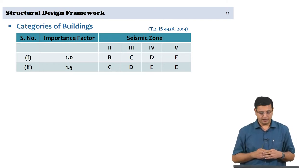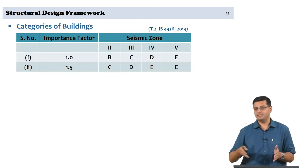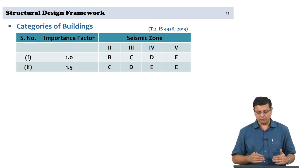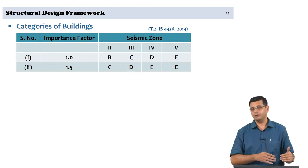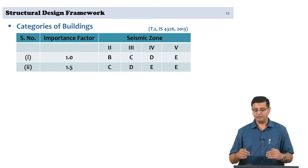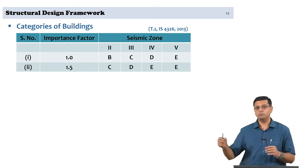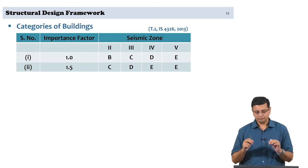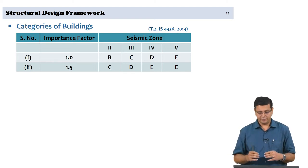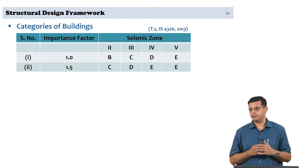Based on the importance factor of the buildings and the seismic zone in which you are designing the structures, we classify them as B, C, D and E categories. An importance factor of 1.5 in zone 2 results in a category C building. Categories B, C, D and E mean there are specific prescribed design interventions to ensure seismic resistance, which is different from the earthquake load defined based on the zone and importance factor.